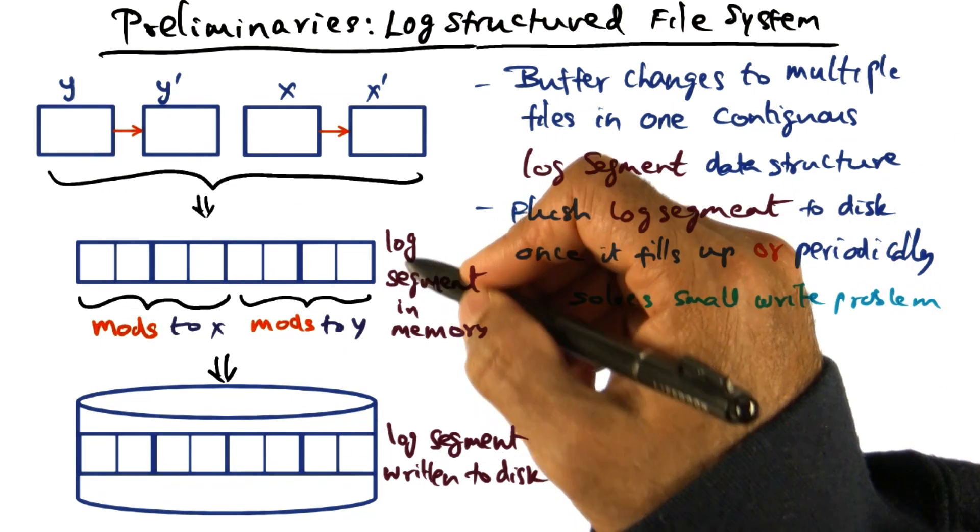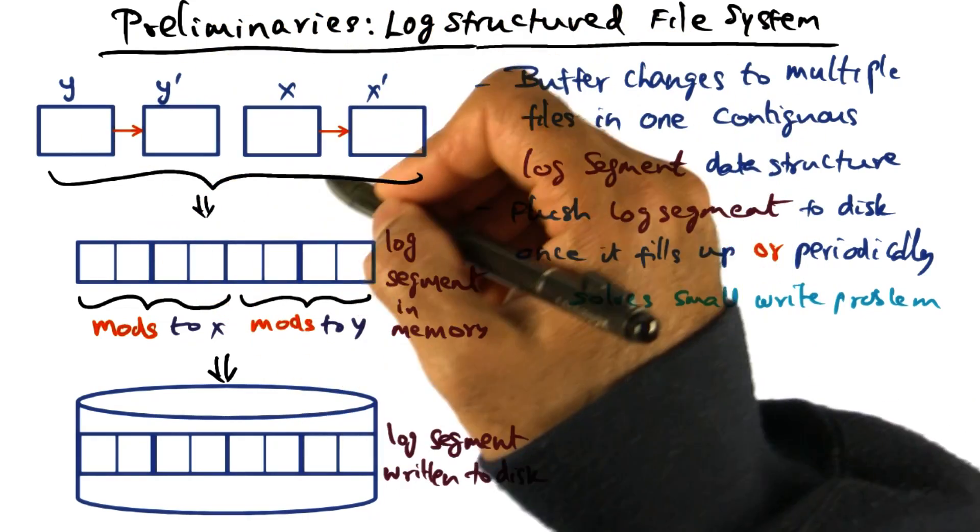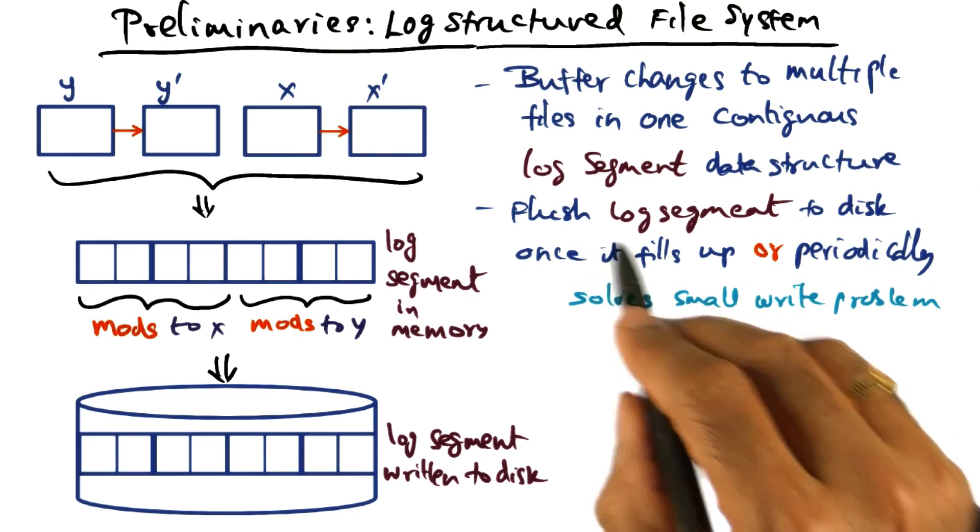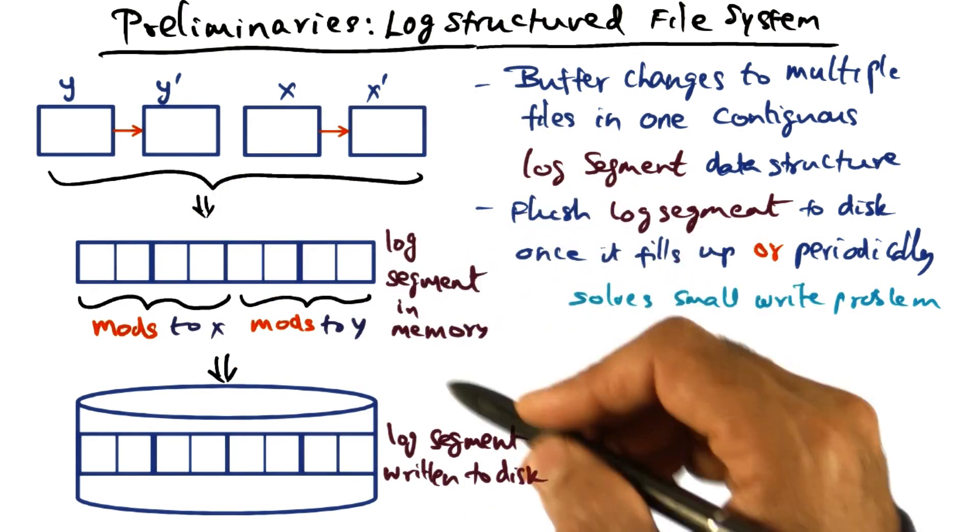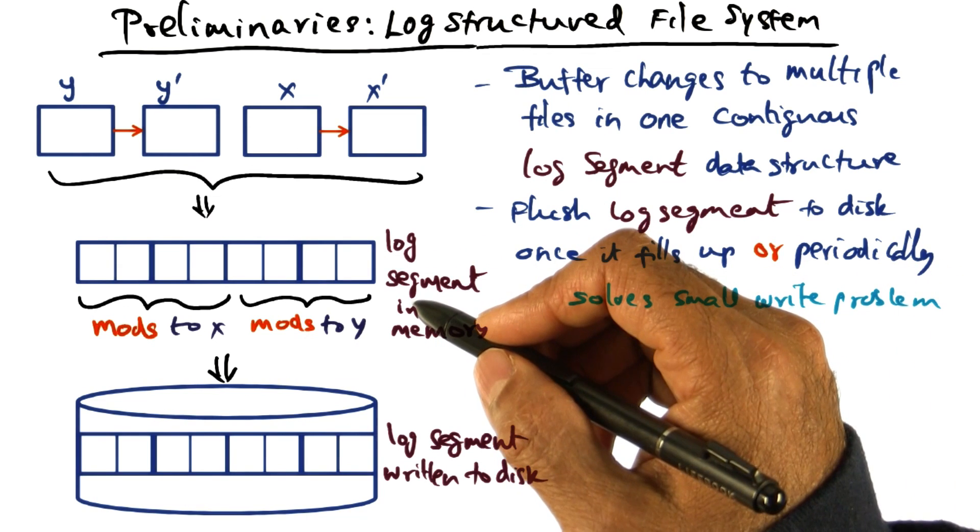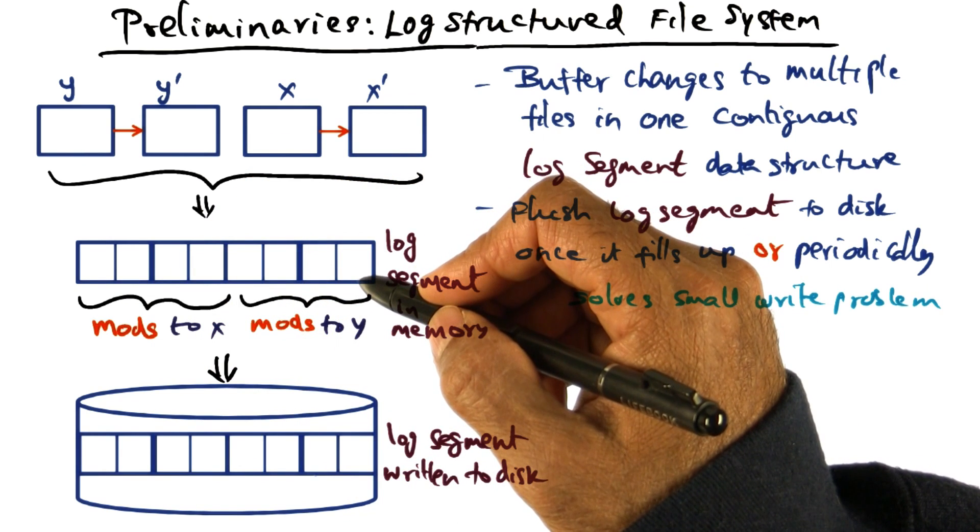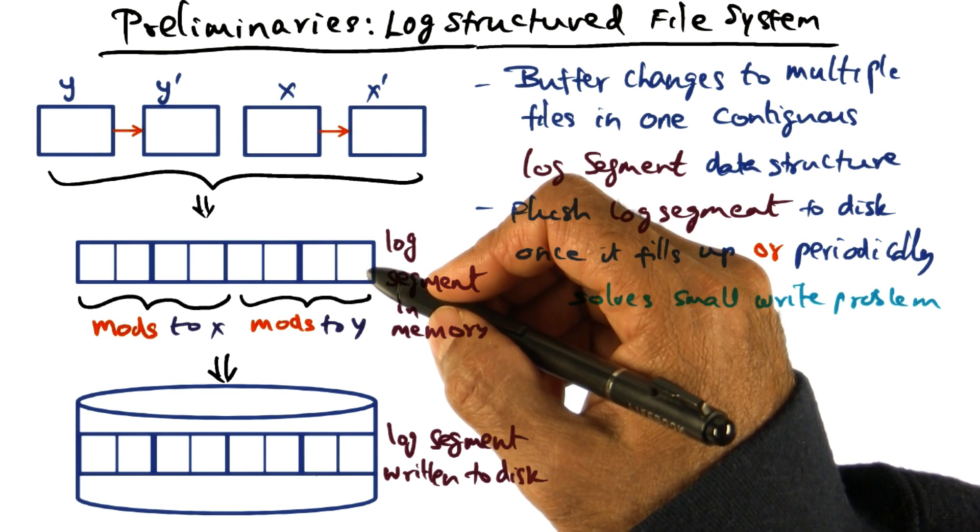And what we want to do is gather these changes to files that are happening in my system in the log segment in memory, and every once in a while, flush the log segment to disk once the log segment fills up to a certain extent or periodically. And the reason is the fact that if it is in memory, you have to worry about reliability of your file system if the node crashes.